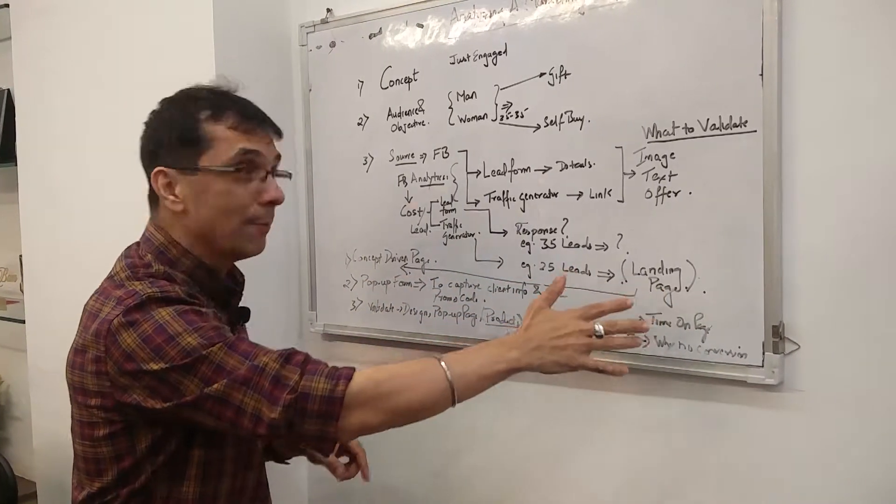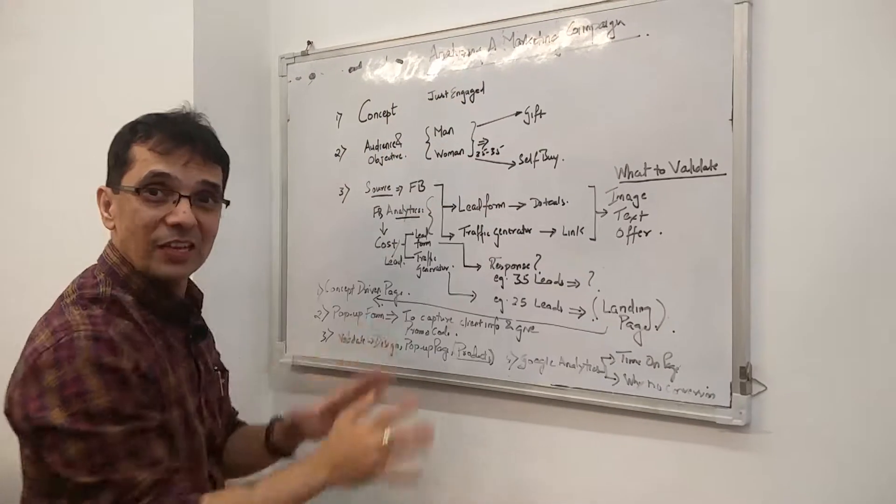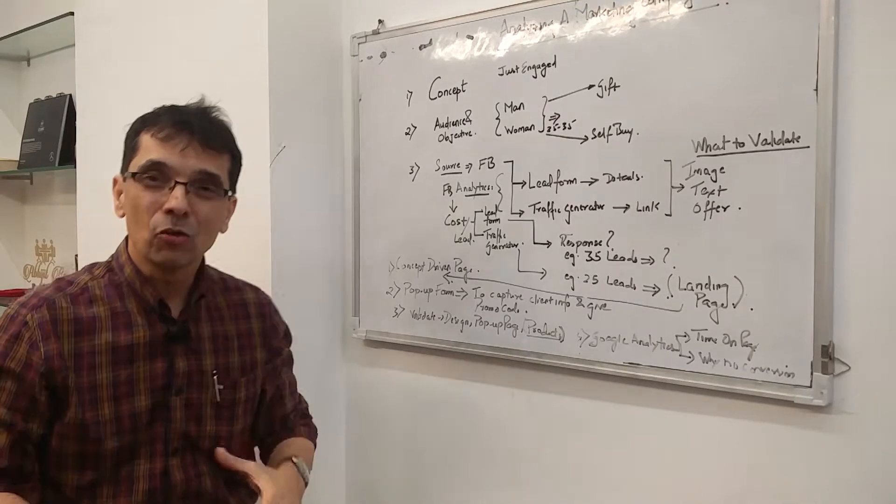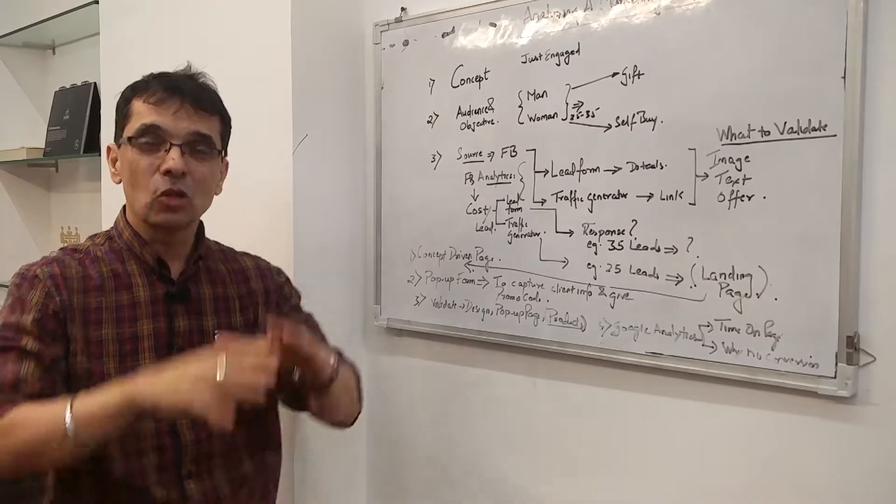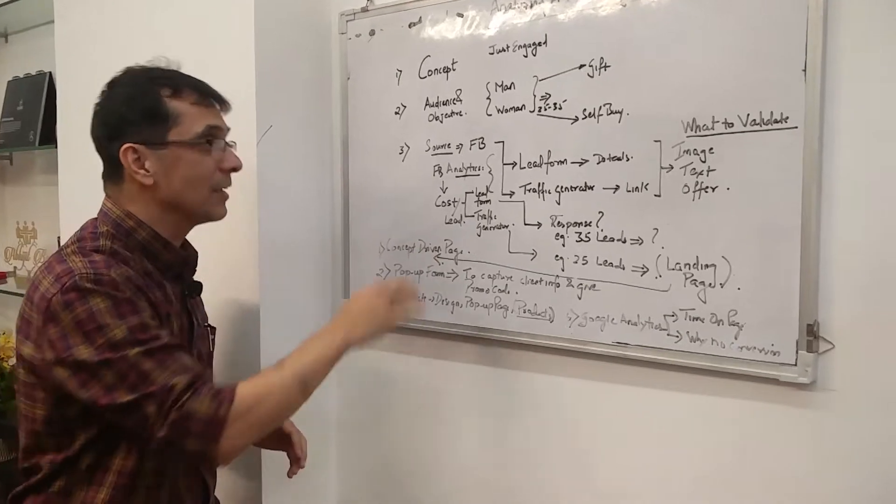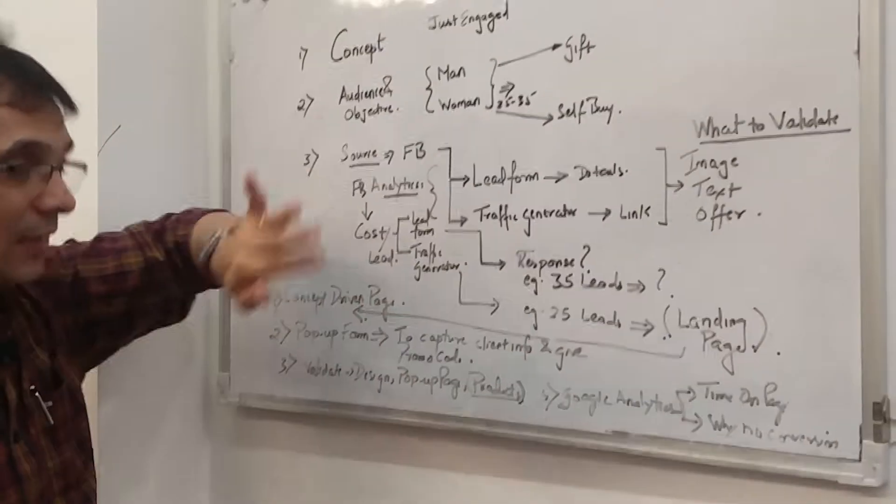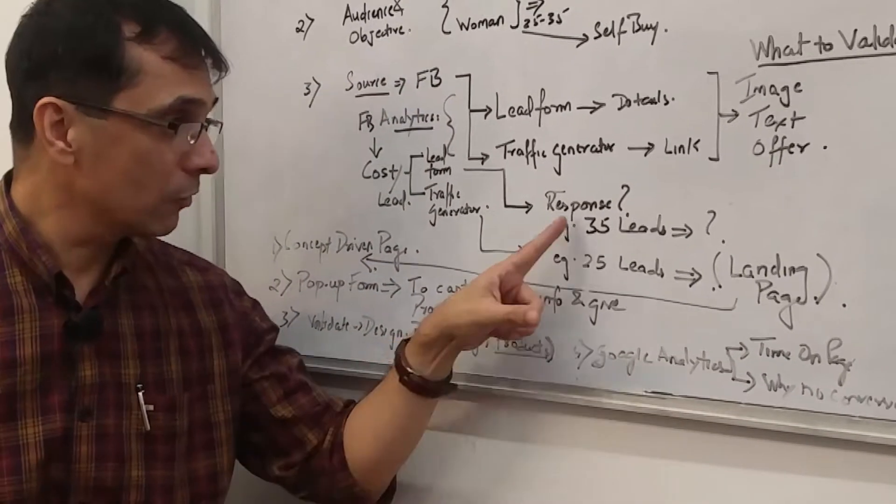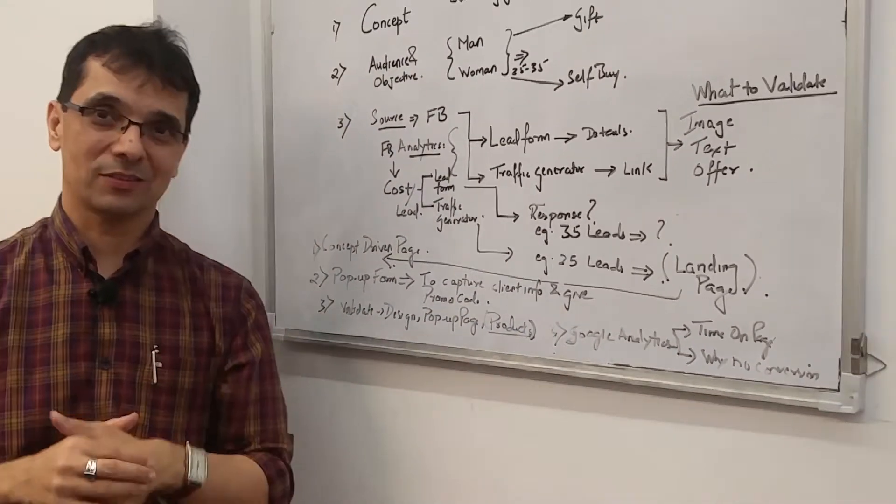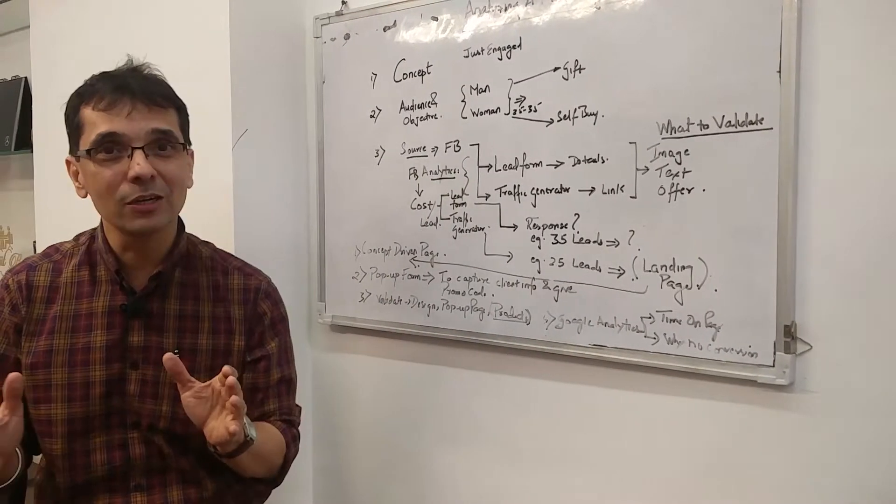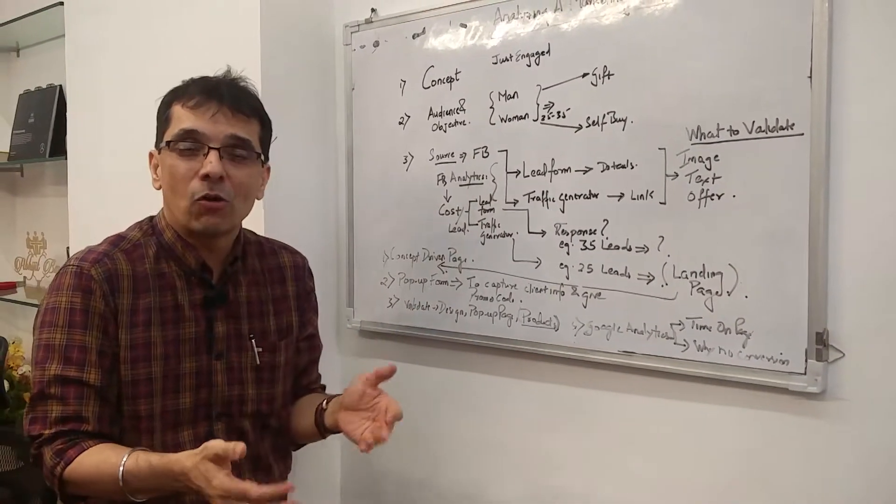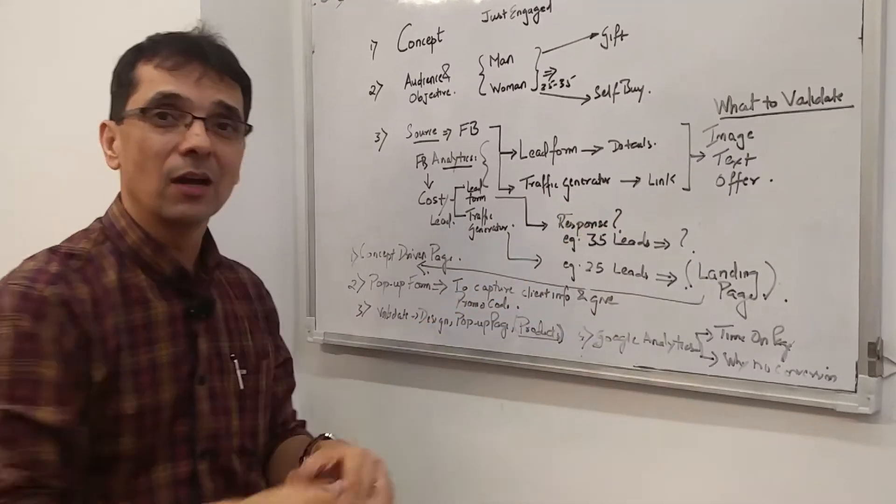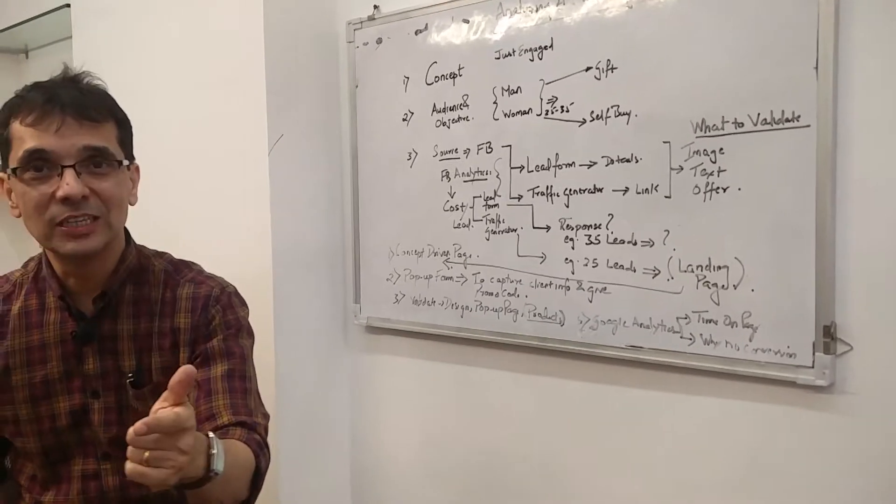When you build a landing page focused on Just Engage as a concept, you don't take them to any page on your portal. Don't shortcut it. You've got to have a landing page that is specialized and focused. That landing page is a concept-driven page. For a man, it's a different thing. For a woman, it's a different page. When somebody comes on the landing page from this traffic generator, you do not have their name or details.